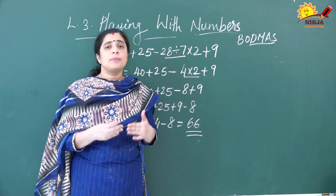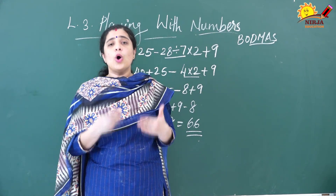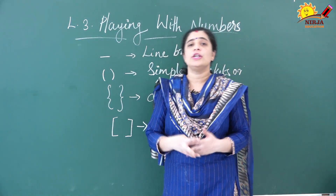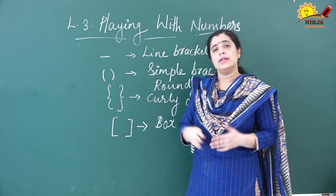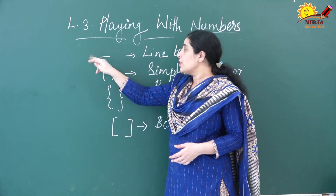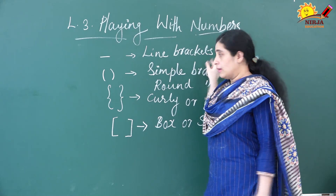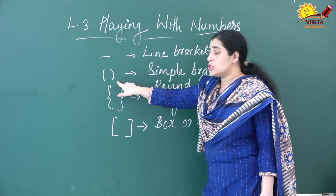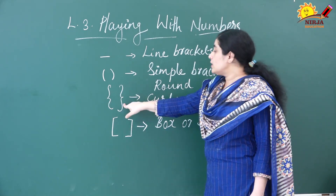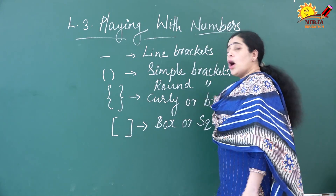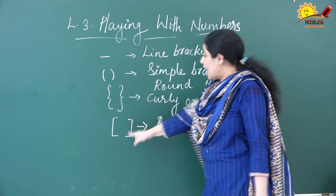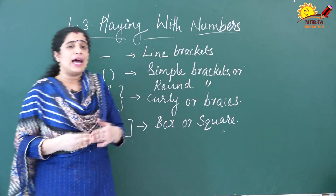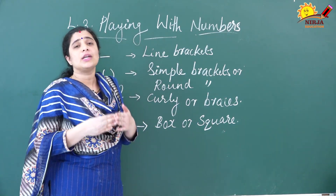Next we are going to discuss problems where brackets are also present, and we will see the order in which to open them. There are different types of brackets. The first is the line bracket, represented by a line. The second is the simple bracket or round bracket. The third is the curly bracket or braces, which is curly in shape. The fourth is the box or square bracket. These are the different types of brackets.